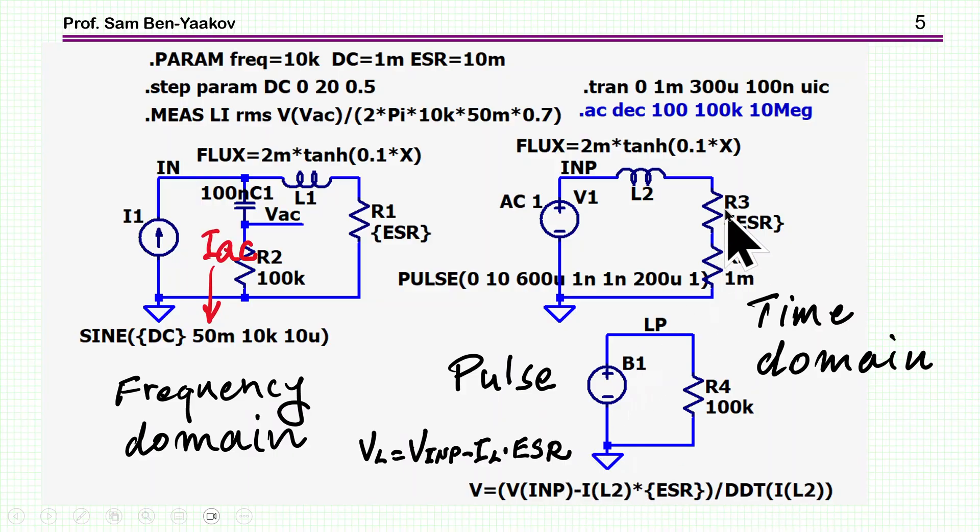In order to take into account the ESR, I am actually subtracting the drop of the ESR from the input voltage. Here it is, this is the input voltage. This is the voltage on the inductor, which is equal to the input voltage minus the drop on the ESR, so it will take into account to some extent the possible error of the ESR.